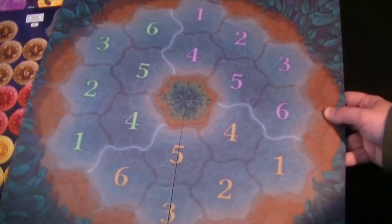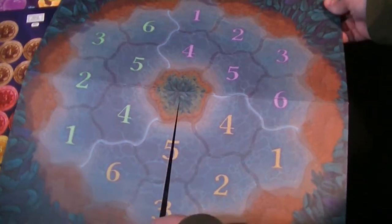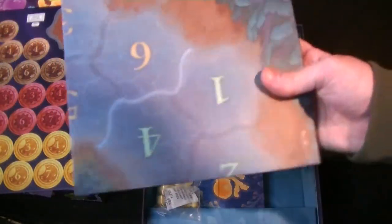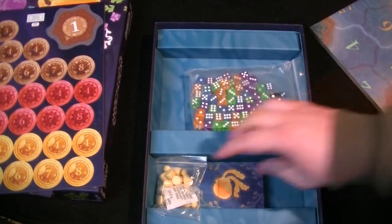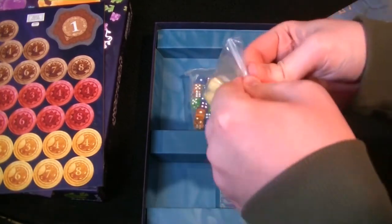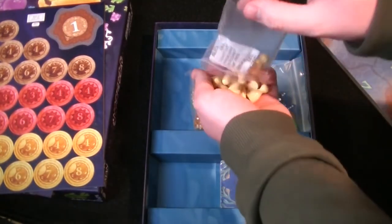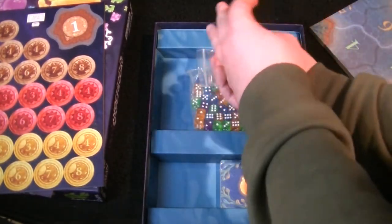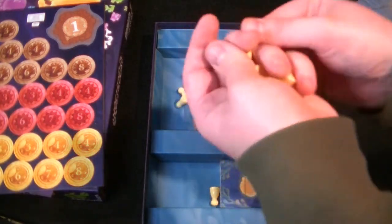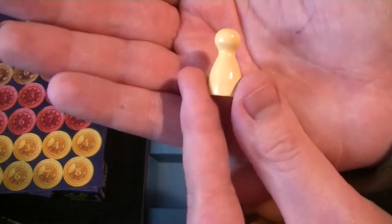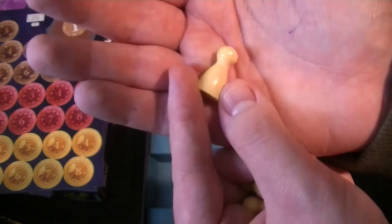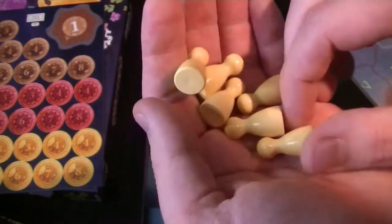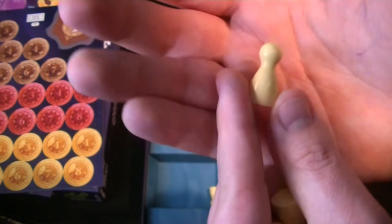Next up we have some player pawns, which are kind of a yellow, tan color.